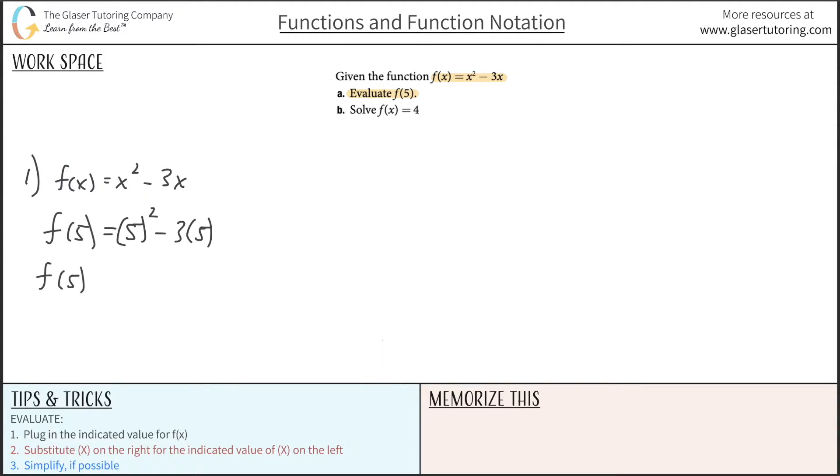So this is f of 5 then, and 5 squared is going to be 25, and this is going to be 15. So just doing the math here, this should simply be 10. So f of 5 is equal to 10. So that takes care of the first one.